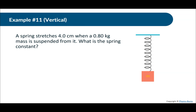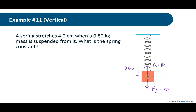A spring stretches four centimeters when a 0.8 kilogram mass is suspended from it. What is the spring constant? When the mass is placed on it, it stretches 0.04 meters until it comes to its new equilibrium. The force of gravity is 0.8 times 10, or 8 newtons, and the force of the spring is also 8 newtons because the net force is equal to zero at equilibrium. Since force of spring equals kx, we have 8 = k × 0.04, giving us k = 200 newtons per meter.